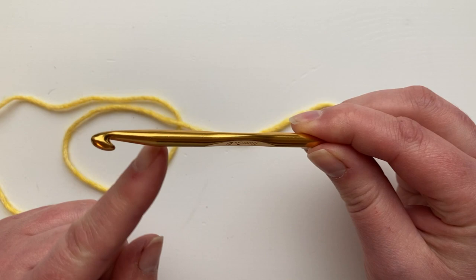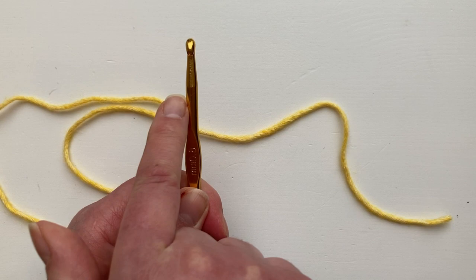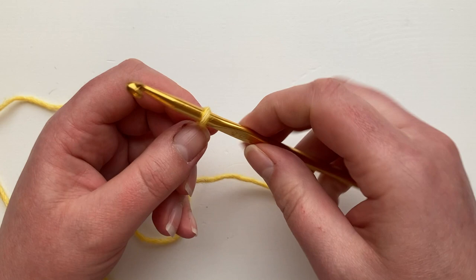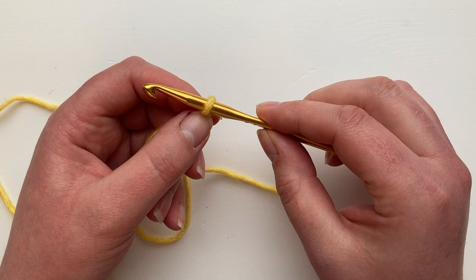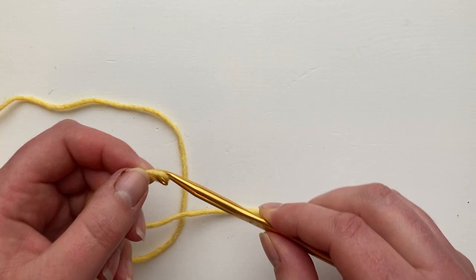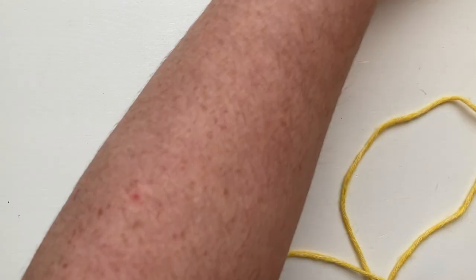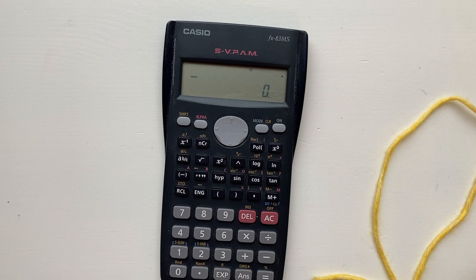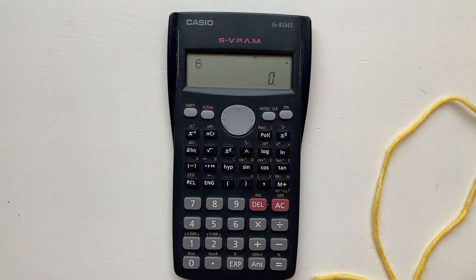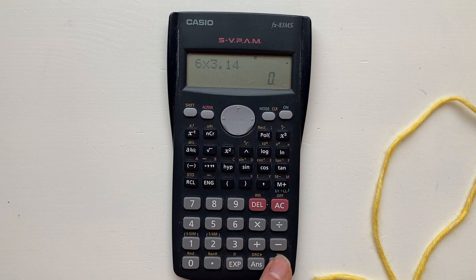When you wrap your yarn around we're wrapping around the circumference. Now to work out the circumference of the wrap you need to multiply the diameter by pi and pi is 3.14. So if we have a look here we take the hook you're using for your cast on, so in this case a 6mm hook. We're going to multiply it by 3.14. That tells me that the circumference, the distance around the hook is 18.8mm.